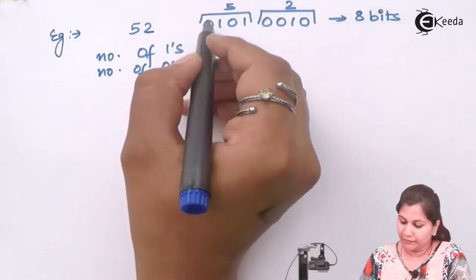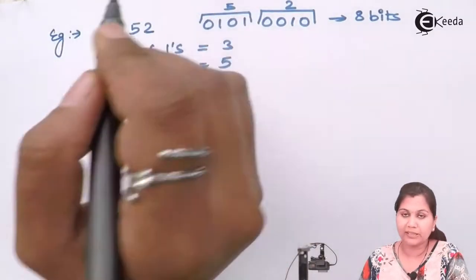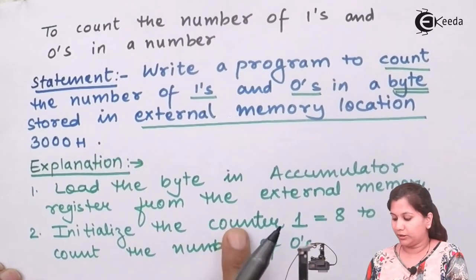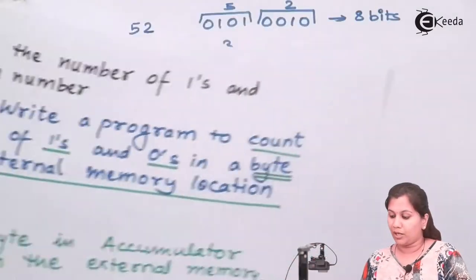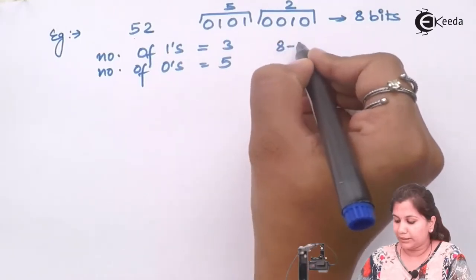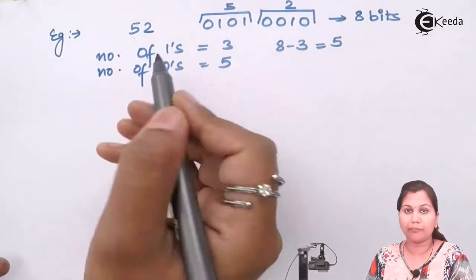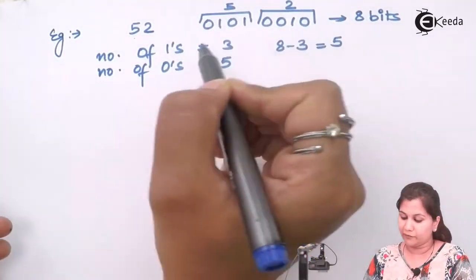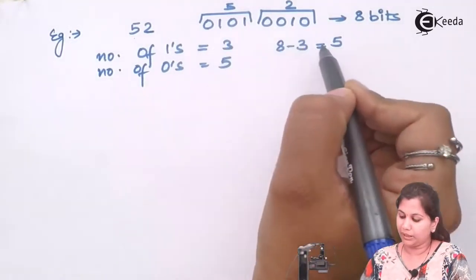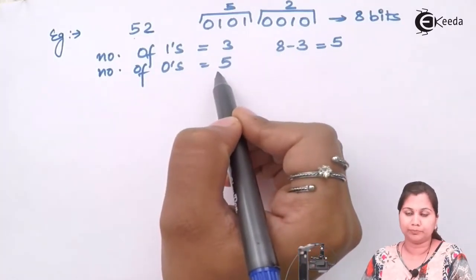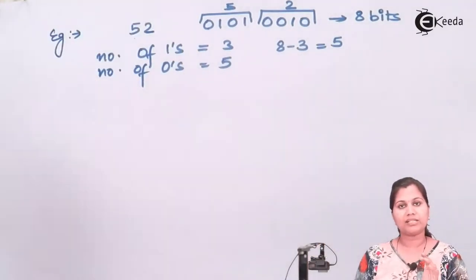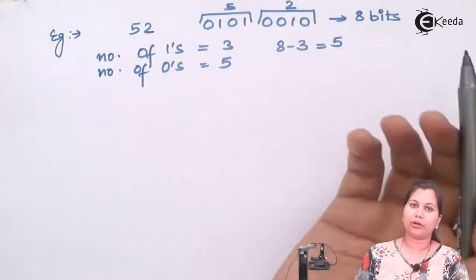To check every bit — whether it is 0 or 1 — we count up to 8 bits. So counter 1 is initialized as 8. When we find that the number of 1s is 3, we subtract it from 8 and get 5, which is the number of 0s. Since the number has 8 bits, if 3 bits are 1 then the remaining bits are obviously 0. So we only count the 1s and subtract from 8 to get the 0s.